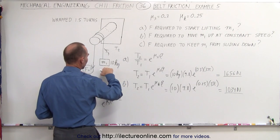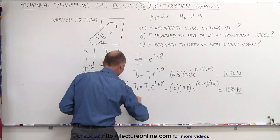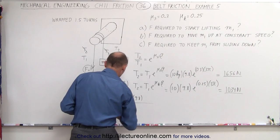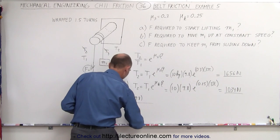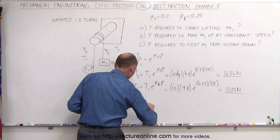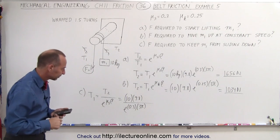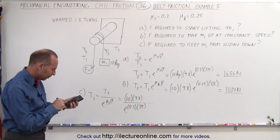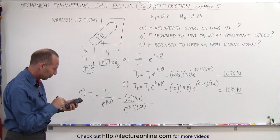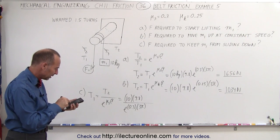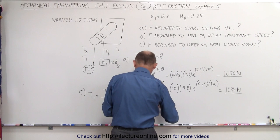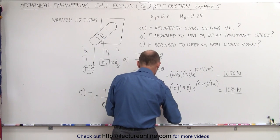So this is equal to T2. Well, in this case, since this is T2, that would be 10 kilograms, the weight of that object times 9.8, and divide that by e to the, again, we go to the static coefficient of friction, 0.3, because nothing is moving yet, and 3 pi for one and a half turns. So 0.3 times 3 times pi, make that the exponent, bring that to the numerator, and times 98 equals, and it only will require 5.8 newtons.